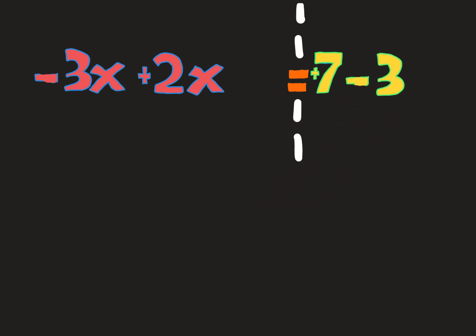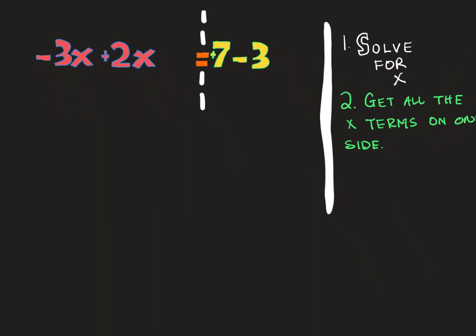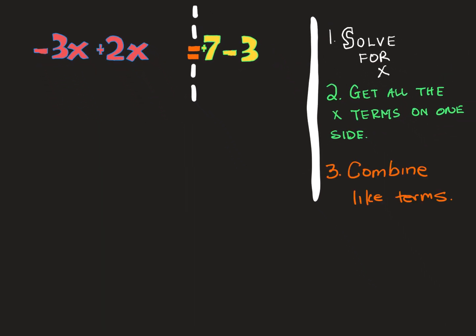Now we can easily combine like terms. So now just combining the like terms on both sides, negative 3x plus 2x is negative x, and positive 7 minus 3 is just positive 4. So if negative x equals positive 4, then x equals negative 4, or you can think of it as multiplying both sides by negative 1 to flip the signs.